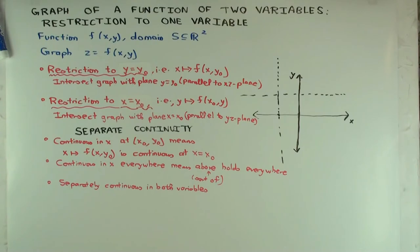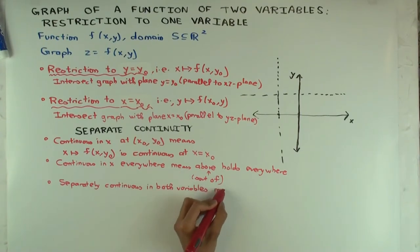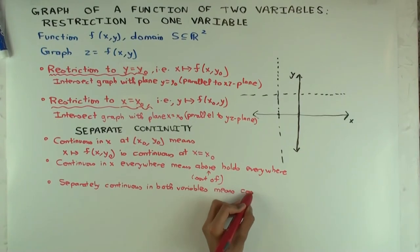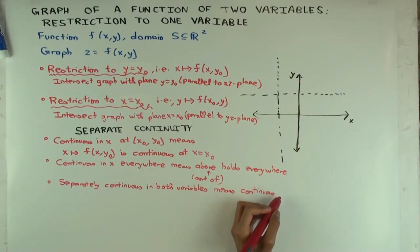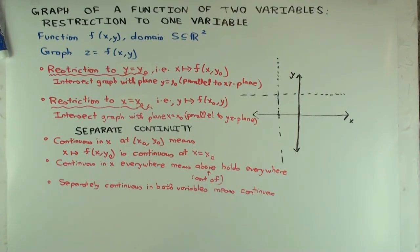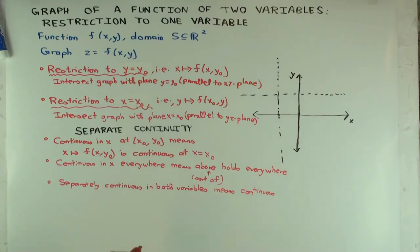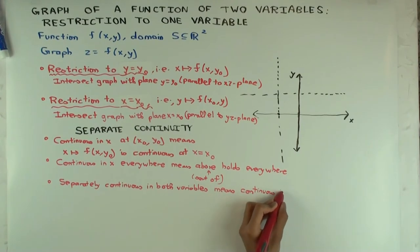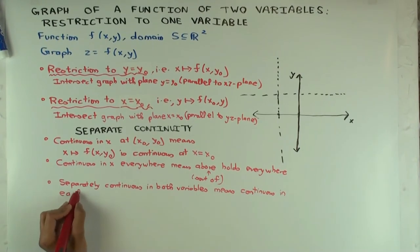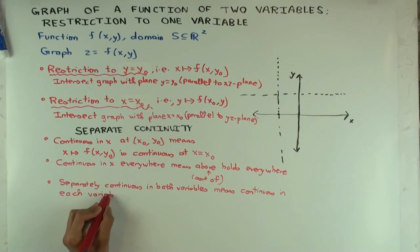Separately continuous means it's continuous in each variable separately. But why do I say separately continuous? Because it's not the same as jointly continuous. Jointly continuous means you use the epsilon-delta definition — if you get close enough from any direction, you're close. Separately continuous just means continuous along the vertical and horizontal lines. So separate continuity in both variables means continuous in each variable separately, but it need not be jointly continuous — meaning along a diagonal or curved direction of approach, it need not be continuous.